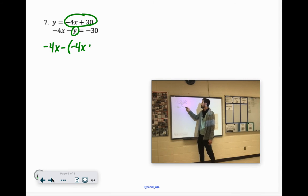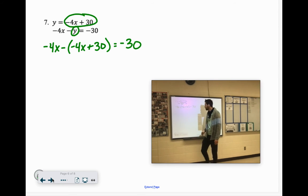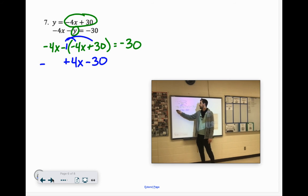So we have negative 4x minus this stuff. Negative 4x plus 30 equals negative 30. So if we were to distribute that negative, or think of it like negative 1, that would give us positive 4x and negative 30. So we'll bring down the other stuff. Negative 4x plus 4x minus 30 equals negative 30.